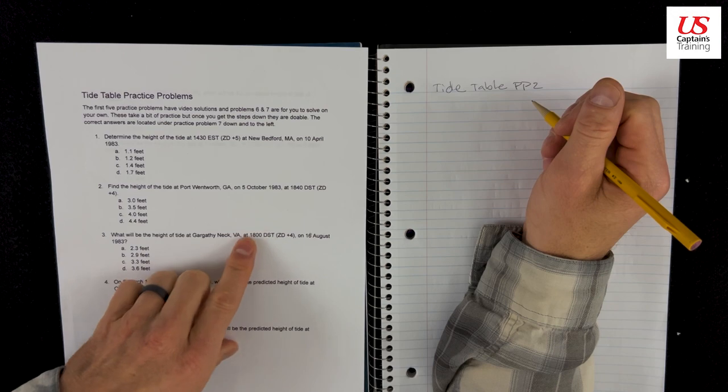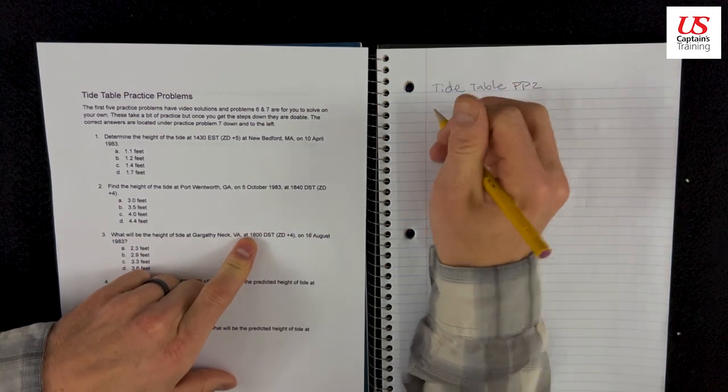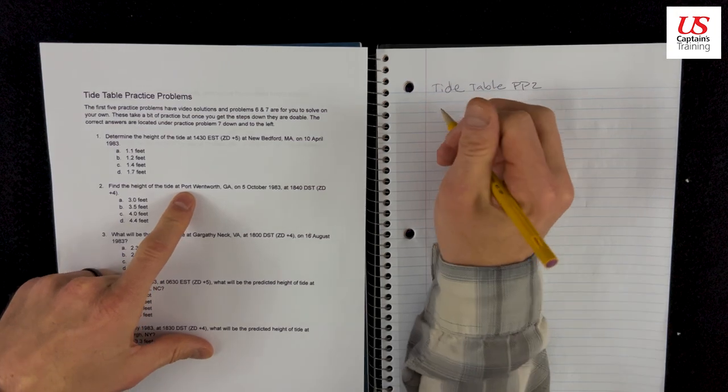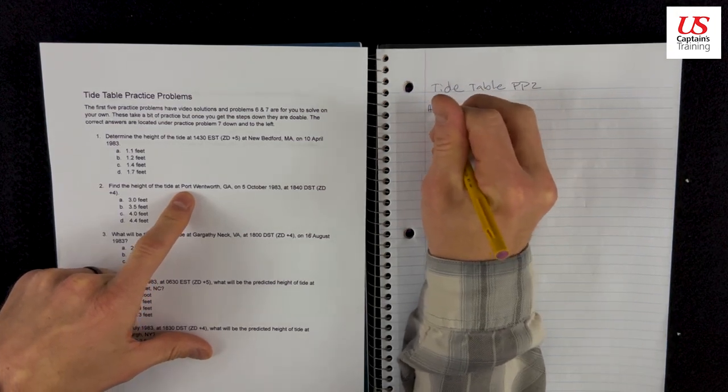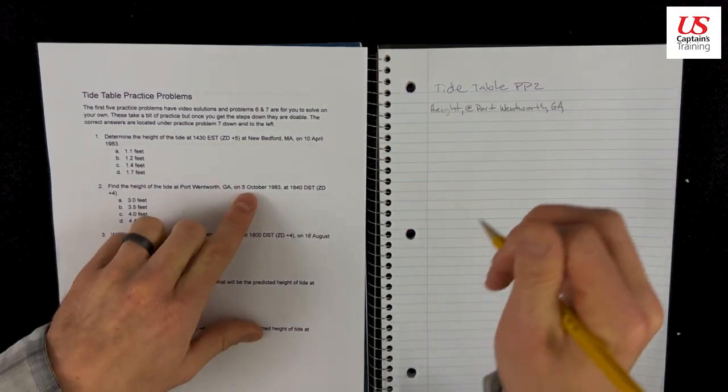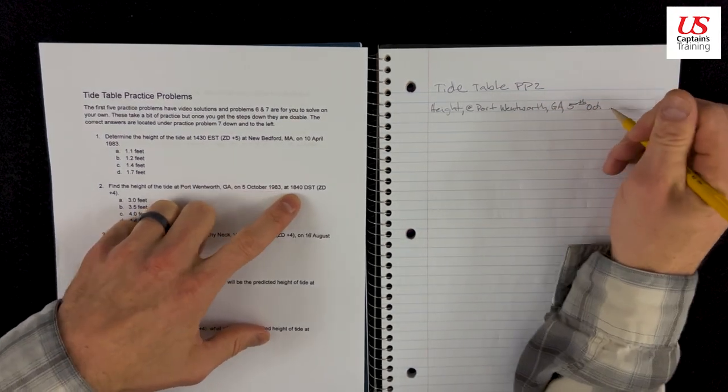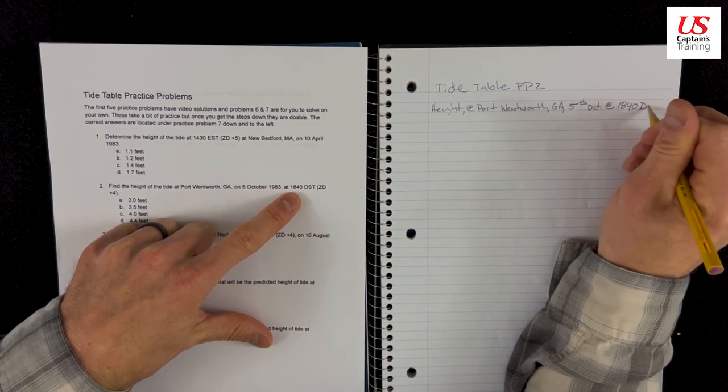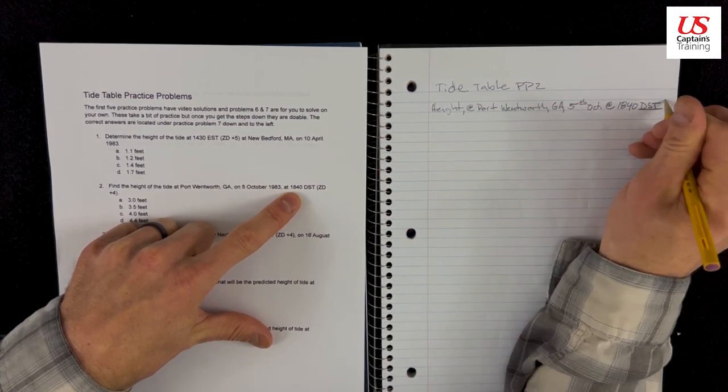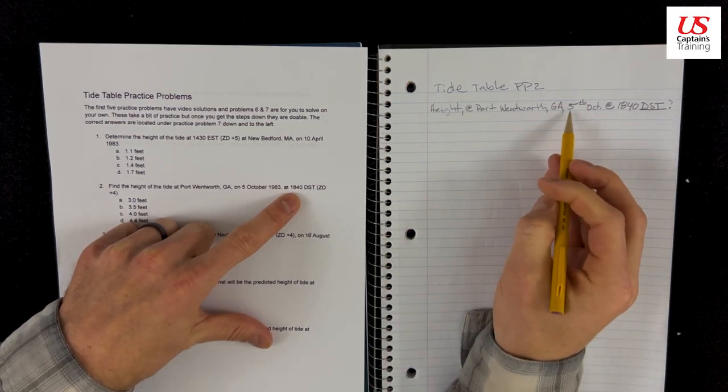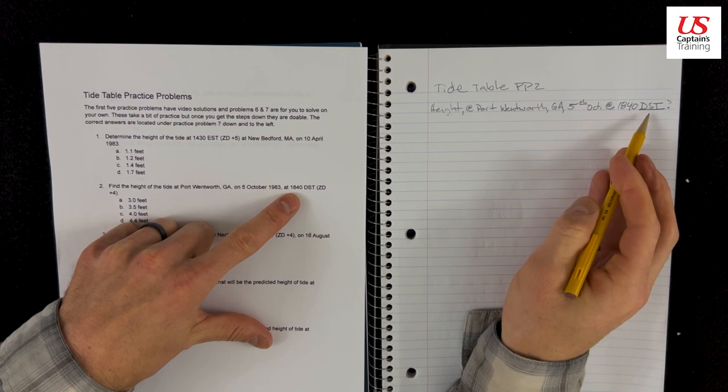Let's get into it. We're looking for the height of the tide at Port Wentworth, GA, 5 October at 1840 DST. Don't forget about your DST. What's the height of the tide at Port Wentworth, GA, 5th of October, 1840 DST?